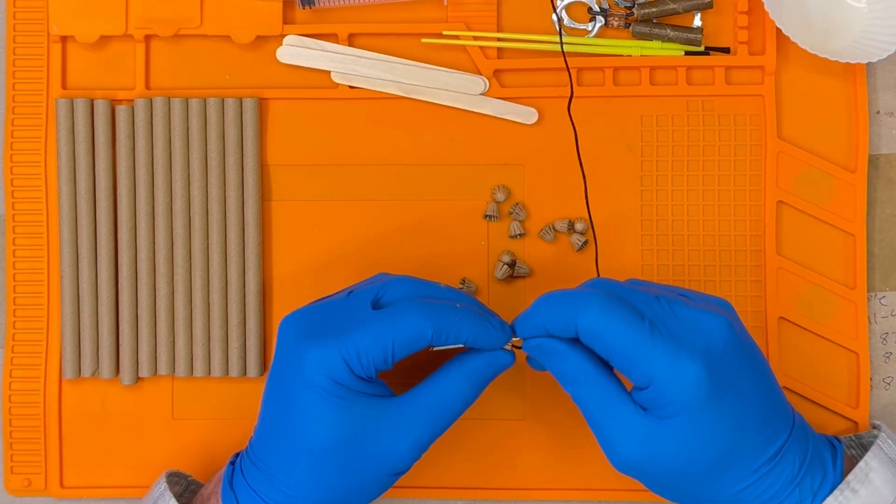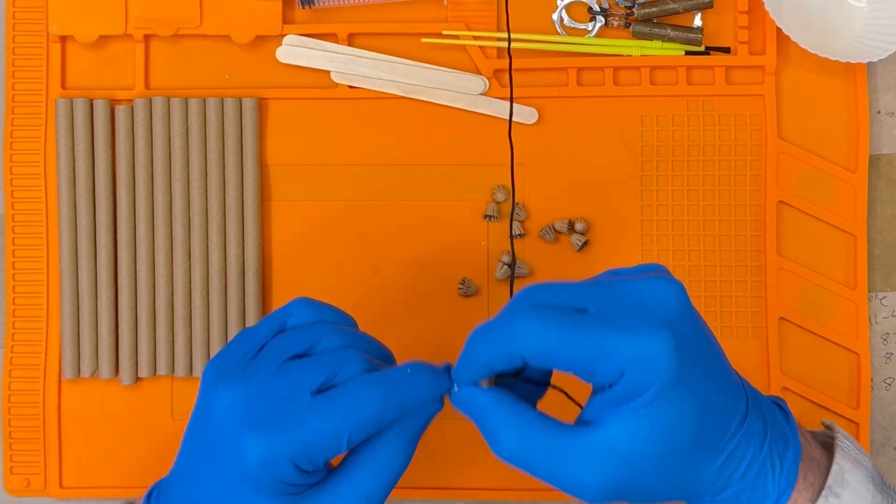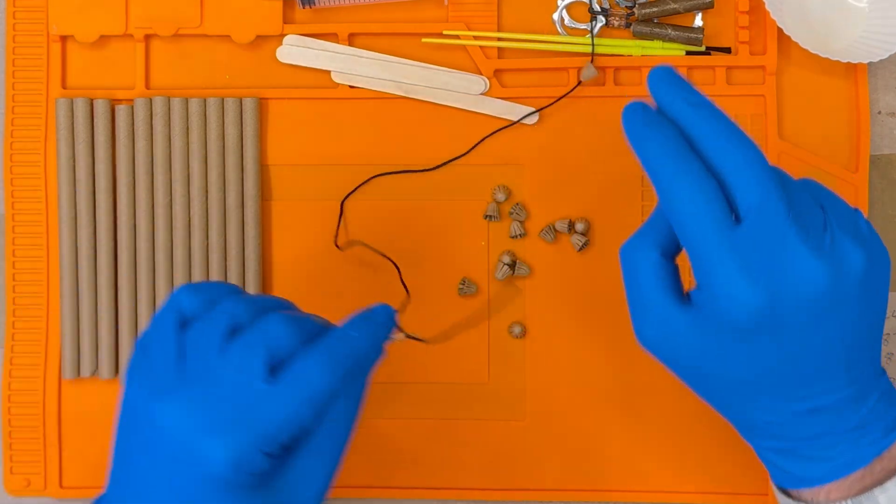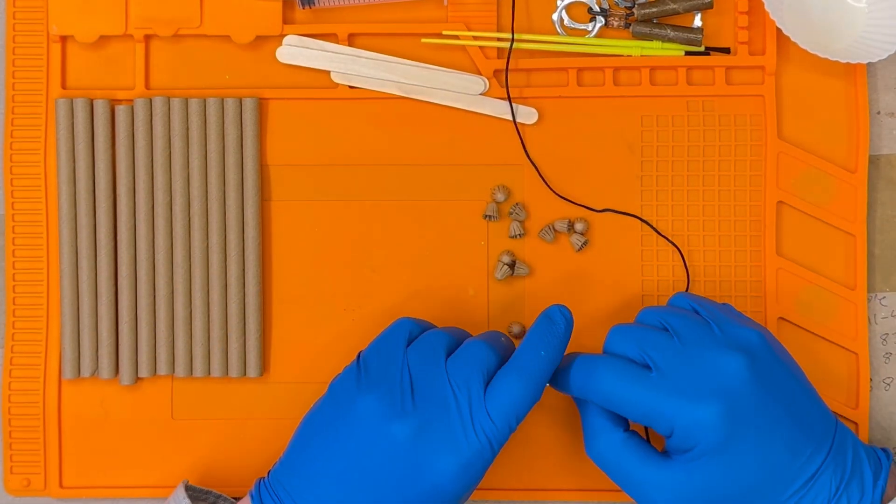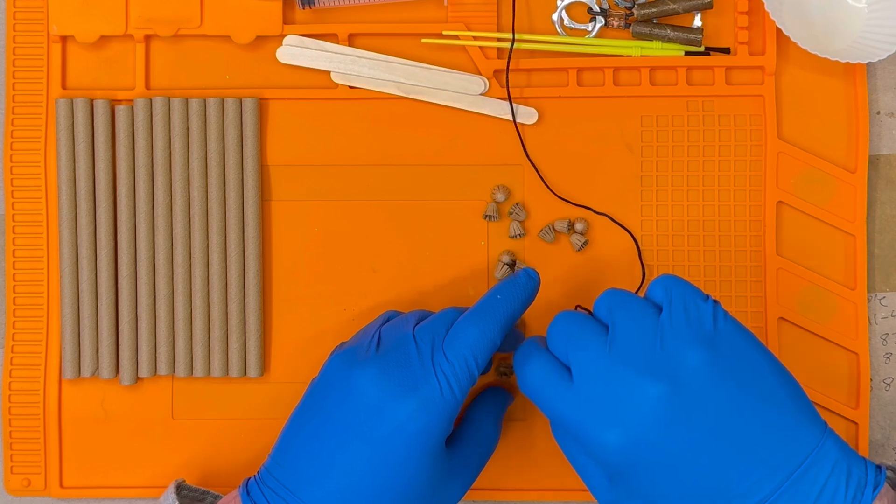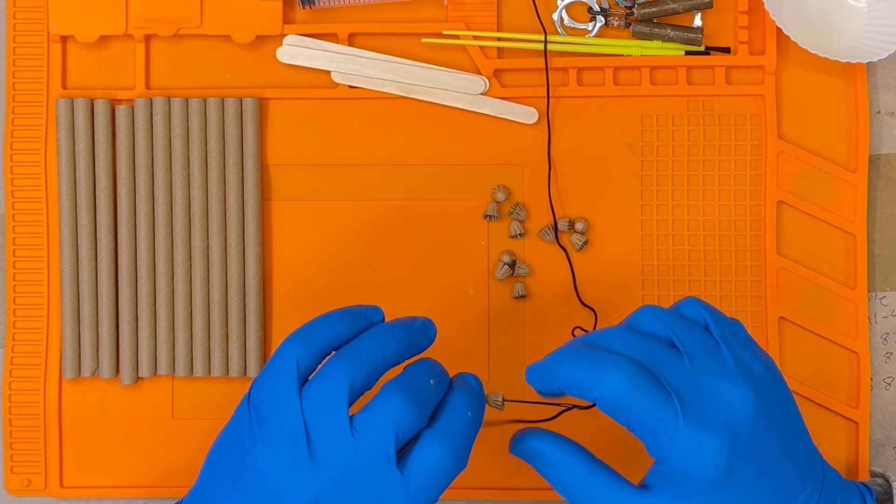Now we thread the satin cord through the center of the ignition cups using an upholstery needle. Using a penetrable backer helps the process significantly. This could be a squishy silicone mat or a block of wood with a small hole drilled into it.